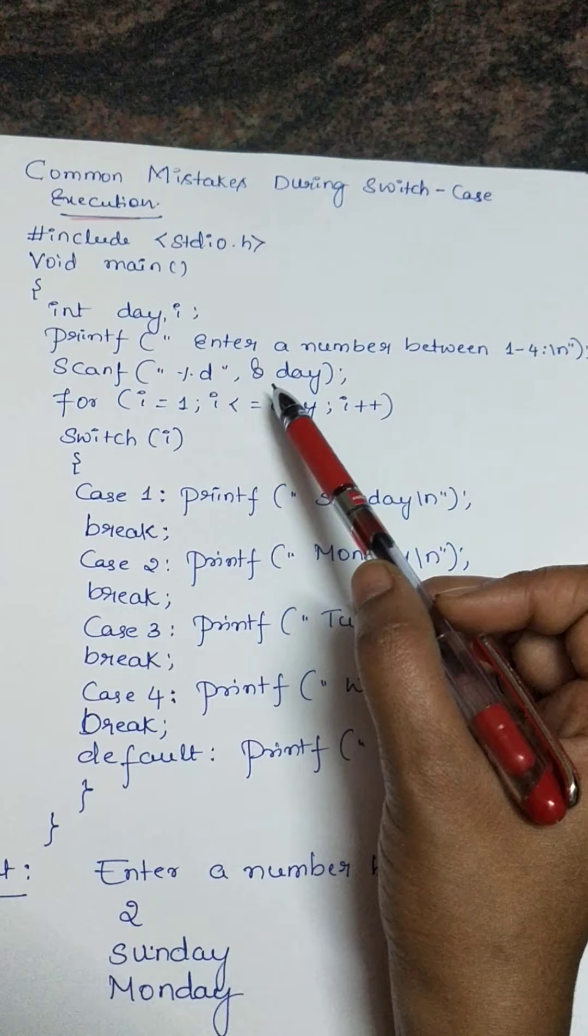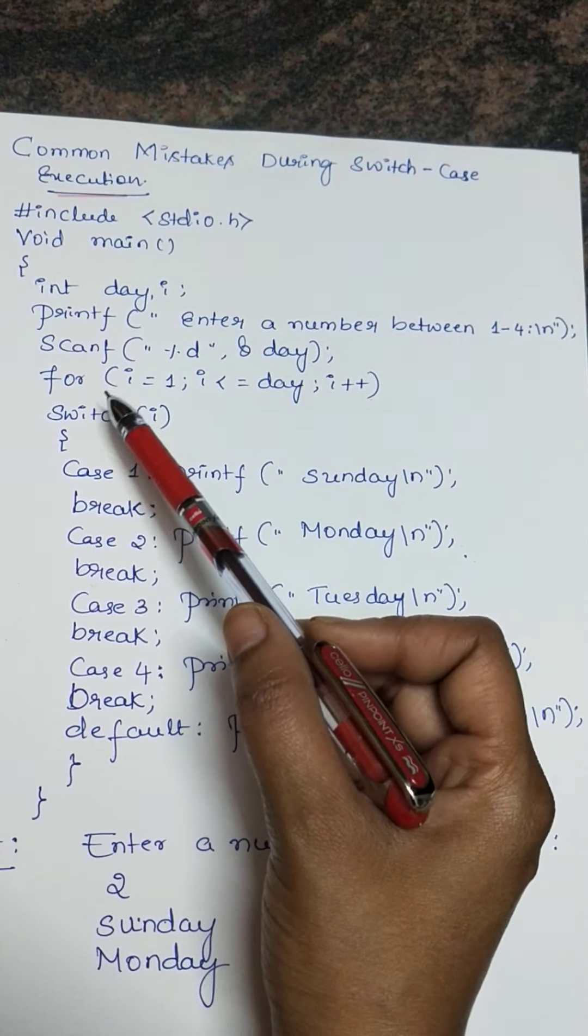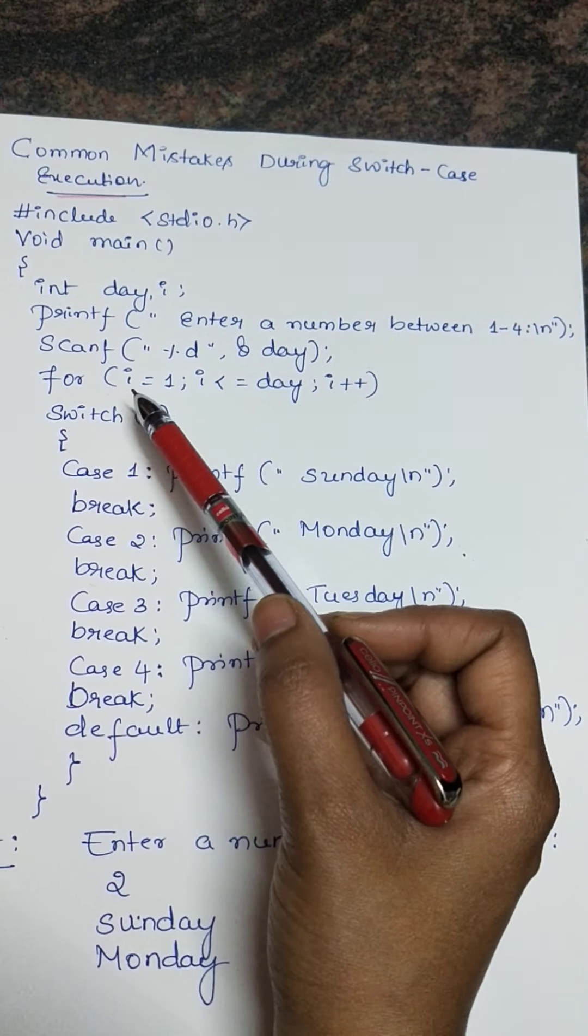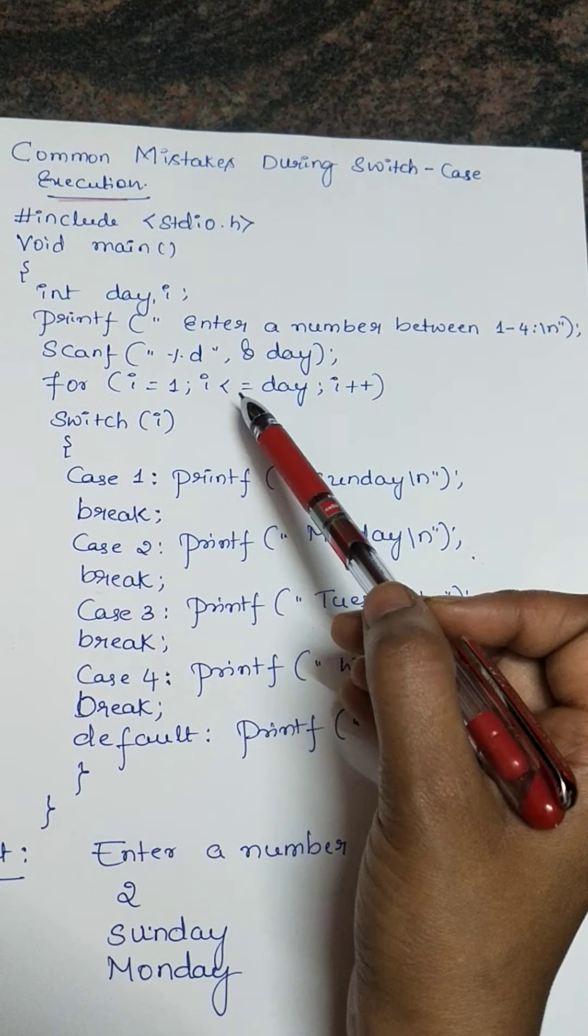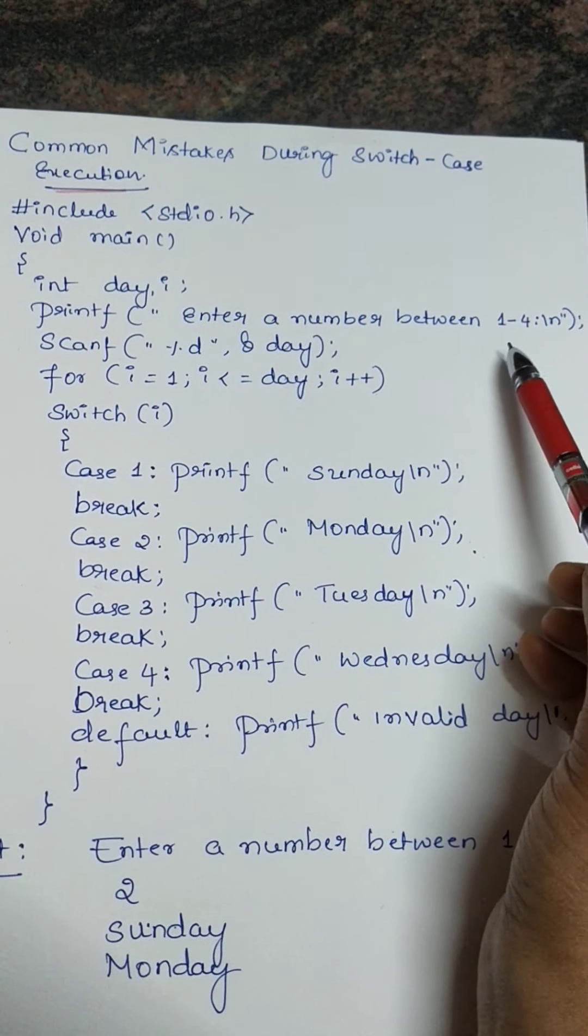The variable day is accepting the value between 1 to 4. And now I am using a for loop: for i equals 1, i less than or equal to day, i plus plus. Suppose if my value is 2, then until it becomes 2, that is i value should be less than or equal to 2, until that the for loop executes the switch statement.